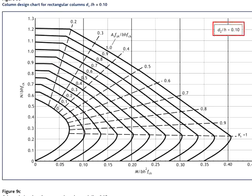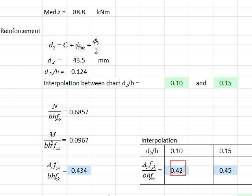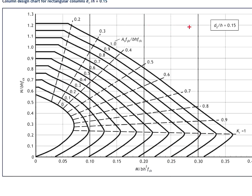Refer to the chart for the d/h equals to 0.10. Draw a line somewhere near 0.69 and 0.096. You will obtain that the As·fyk/(b·h·fck) is about equal to 0.42, as written here. Next, refer to the chart of 0.15. Do the same thing.